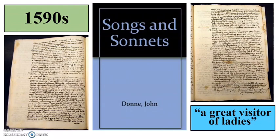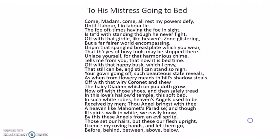Donne wrote many erotic poems in his youth. In the 1590s he spent much of his time and money on leisure such as travel, theatre and women. A contemporary famously described him as 'a great visitor of ladies.' It's in this decade that he wrote the 55 poems which feature in his Songs and Sonnets. Please note that none of the poems in this collection are songs nor sonnets in the technical sense. These love poems and erotic verses were not published in his lifetime, though they were circulated in manuscript form.